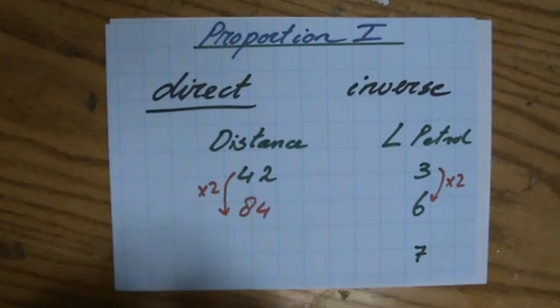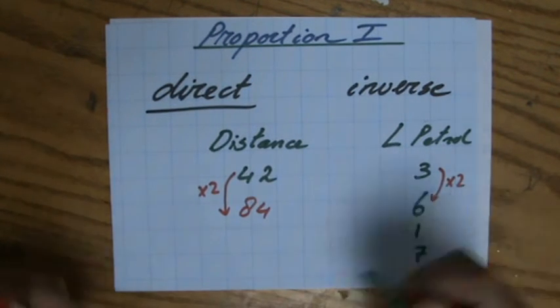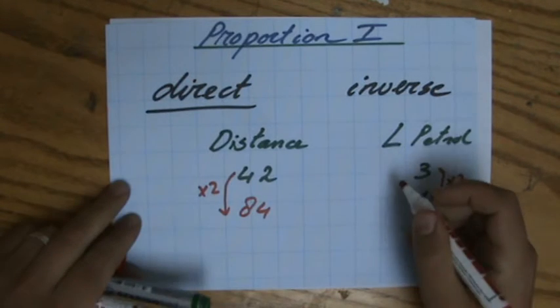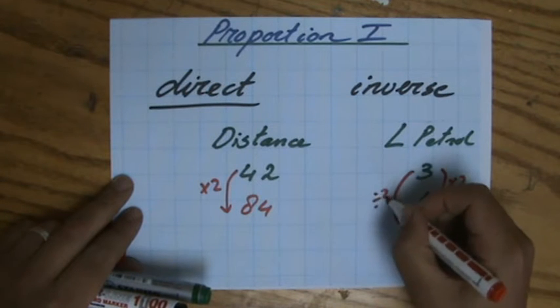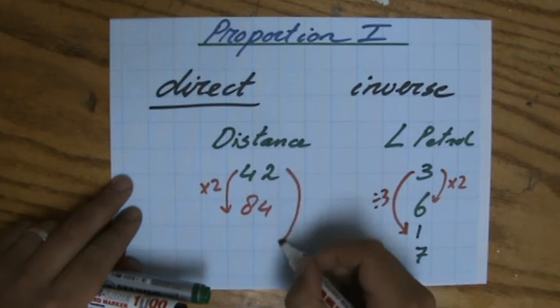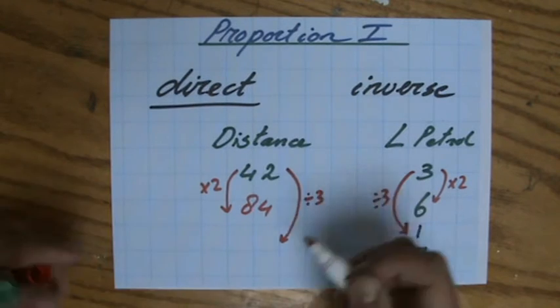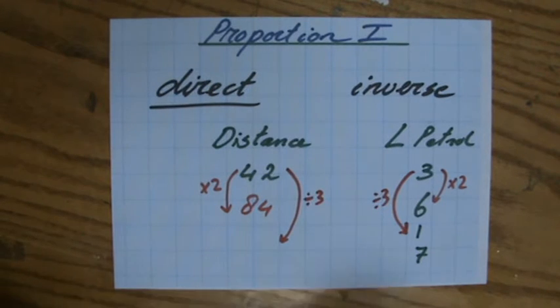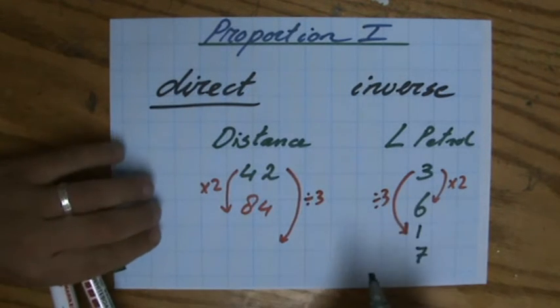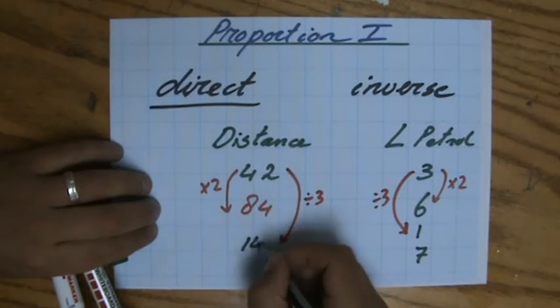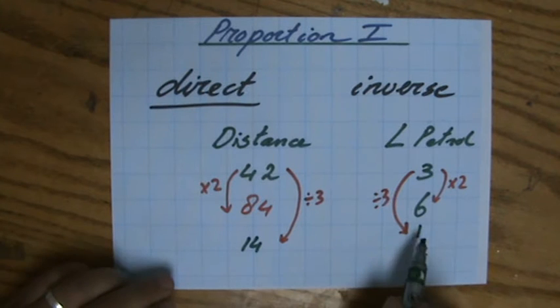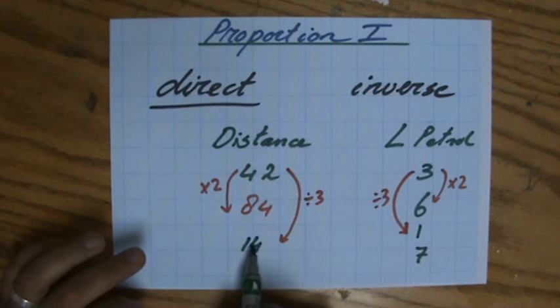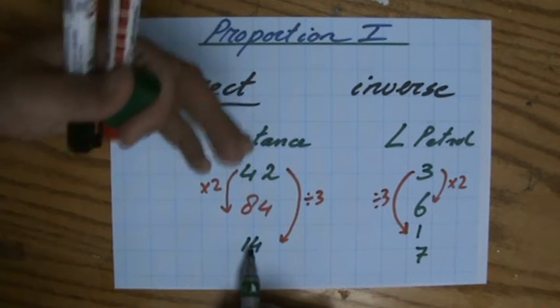First, I'm going to find out 1 liter. How far is that going to bring me? From 3 to go to 1, I divide it by 3. So direct proportion, I also have to divide the distance by 3. And 42 divided by 3 is 14. Is that correct? 3 times 40, 30, 42. Yes, 14. So 1 liter, the car will travel 14 kilometers.